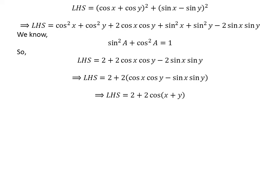We know the cosine addition identity: cosine of x plus y is equal to cosine of x times cosine of y minus sine of x times sine of y.